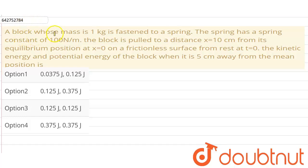Hello everyone, so our question is: a block whose mass is 1 kg is fastened to a spring. The spring has a spring constant of 100 Newton per meter. The block is pulled to a distance of 10 centimeter from its equilibrium position at x equals 0 on a frictionless surface from rest at t equals 0.